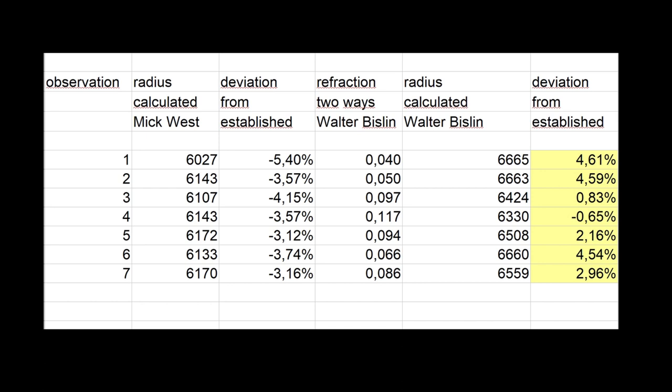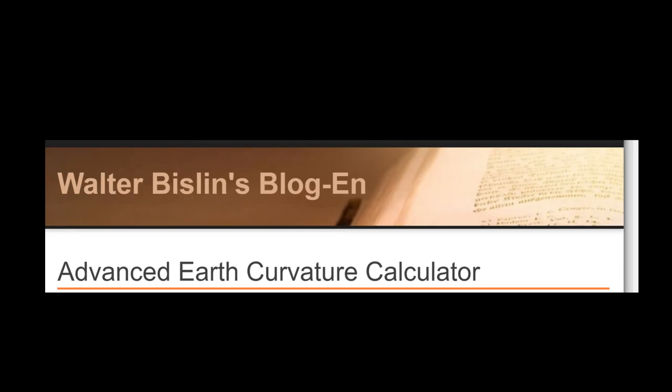The method Walter Bisling uses is remarkably accurate. When the refraction index K is adjusted just a little bit from standard, 0.14 to medium, 0.19, the outcome would be spot on.